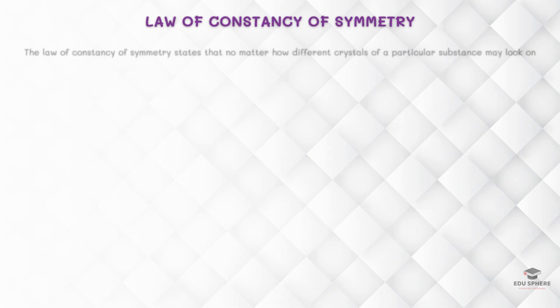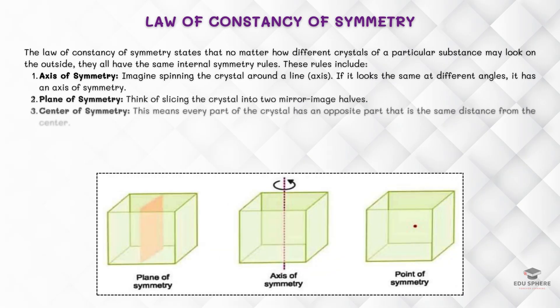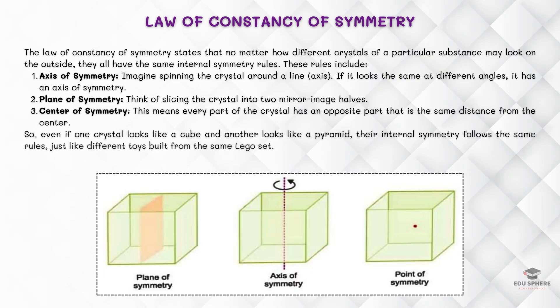The law of constancy of symmetry states that all crystals of a substance have the same elements of symmetry, including the axis of symmetry, plane of symmetry, and center of symmetry. This law was developed from X-ray studies of crystals. It means that crystals of a particular substance have the same elements of symmetry, even if they differ in shape, size, or growth mode. For example, a galena crystal can appear as an octahedron, dodecahedron, or cubic shape, but all of these shapes have the same elements of symmetry.